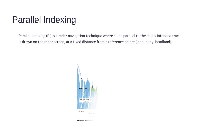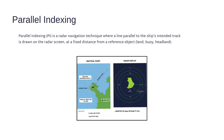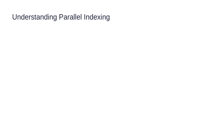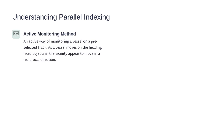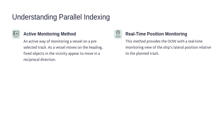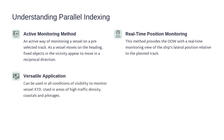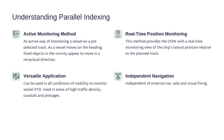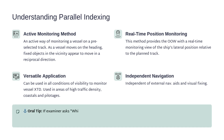Parallel indexing is a radar navigation technique where a line is drawn parallel to your ship's intended track, at a fixed distance from a reference object such as land, a buoy, or a headland. It's an active monitoring method. As your ship moves on its heading, fixed objects appear to move in the opposite direction, giving you a real-time view of your ship's position relative to the planned track. It works in all visibility conditions and can be used in high traffic areas, coastal waters, and during pilotage operations — completely independent of external navigation aids like GPS. Oral tip: The stabilization used for parallel indexing is ground stabilization, because navigation here is relative to land.